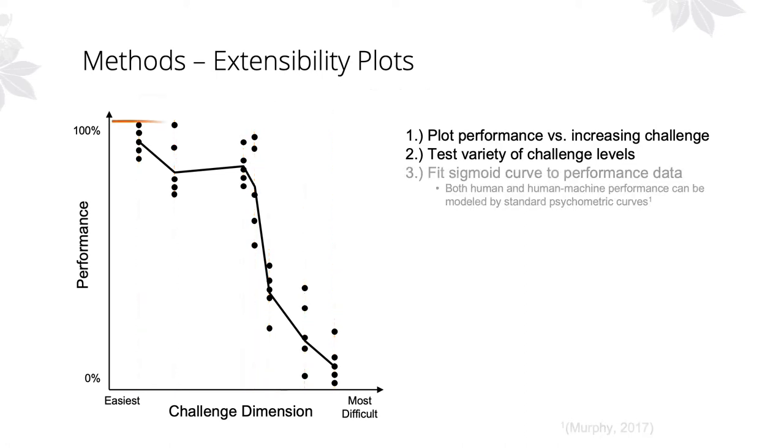After testing is complete, we can plot all the data points and take the average moving from case to case. From these data, we fit a sigmoid curve and use that curve as a model of performance as it relates to the challenge dimension. In this, we draw inspiration from Taylor Murphy's work showing that human-machine performance can be modeled by standard psychometric curves.